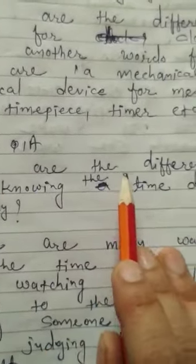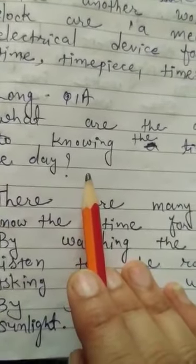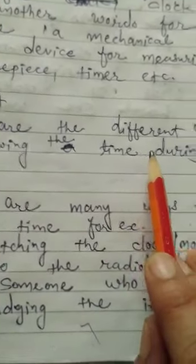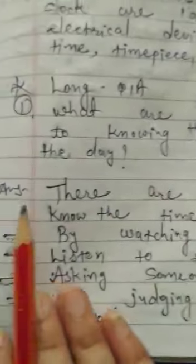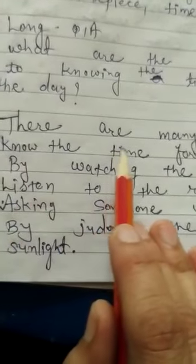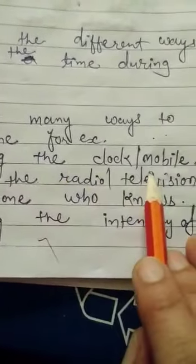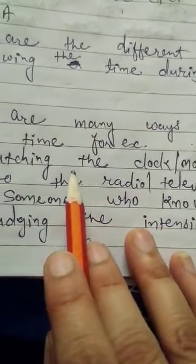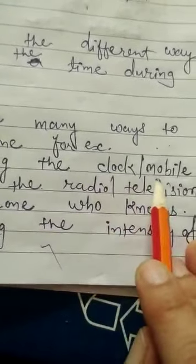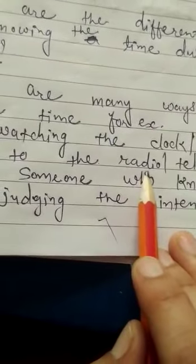Now we go for the long question answers. Number one: What are the different ways to know the time during the day? There are many ways to know the time. For example, number one: by watching the clock or mobile — if we want to know the time, we see the clock or mobile. Number two: listen to the radio or television, which also tells the time. Number three: by asking someone what the time is.